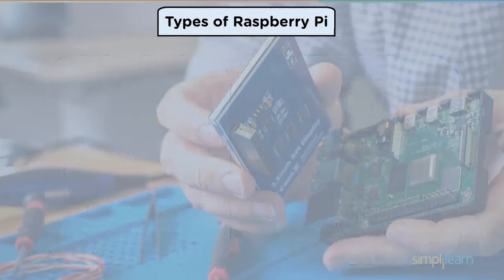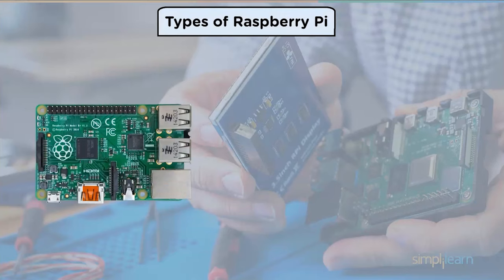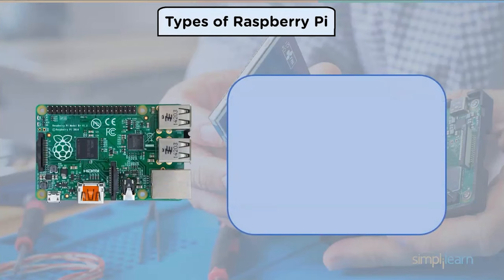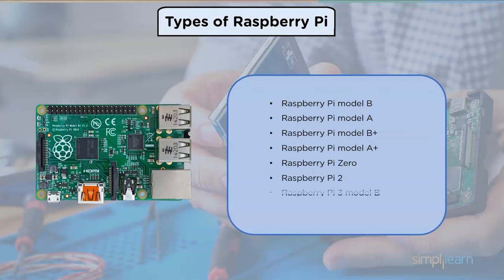Now let us look at the types of Raspberry Pi. The different types of Raspberry Pi are: Raspberry Pi Model B, Raspberry Pi Model A, Raspberry Pi Model B Plus, Raspberry Pi Model A Plus, Raspberry Pi Zero, Raspberry Pi 2, Raspberry Pi 3 Model B, and Raspberry Pi Zero W.